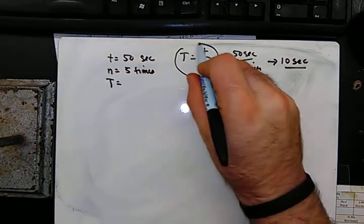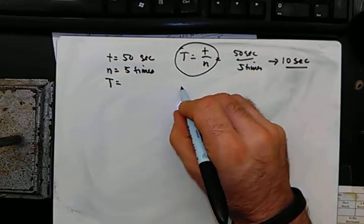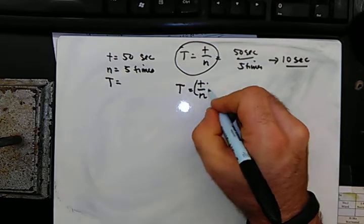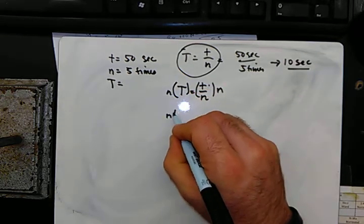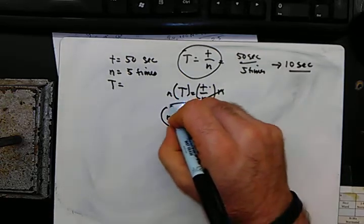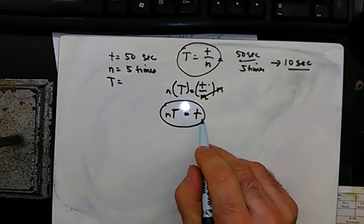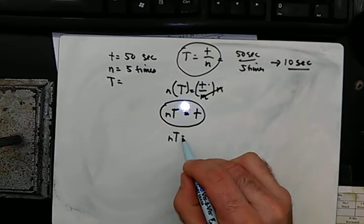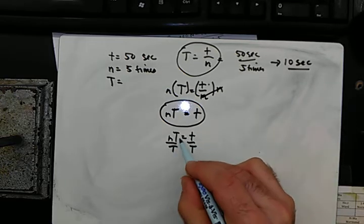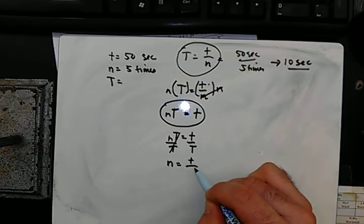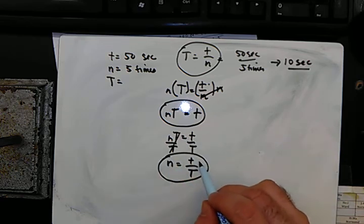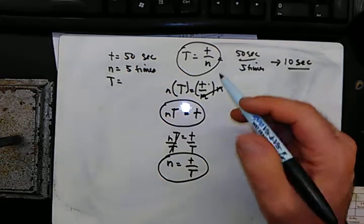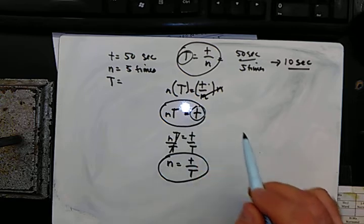By this point, you should be able to solve for the three renditions of this formula. The period equals the time over the number. If you want to solve for time, the second rendition is: number times the period equals the time. And solving for the number: the number of rotations equals the time divided by the period, little t over big T. So those are the three renditions, and you will have to solve for the period, the time, and the number.